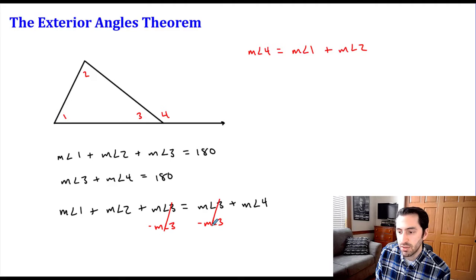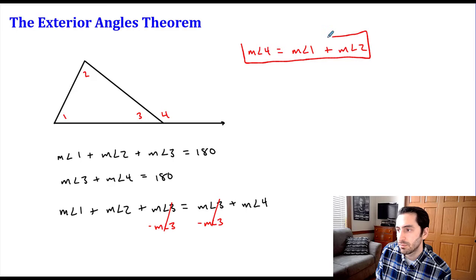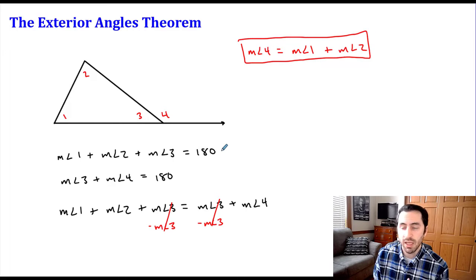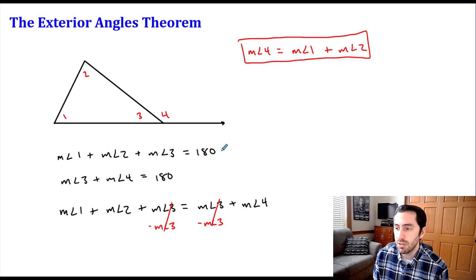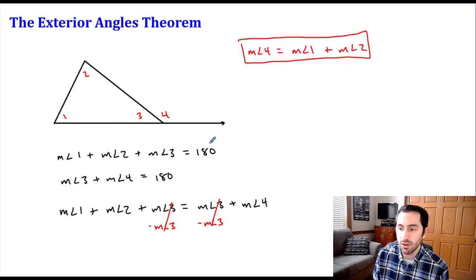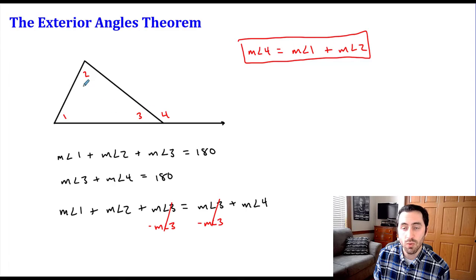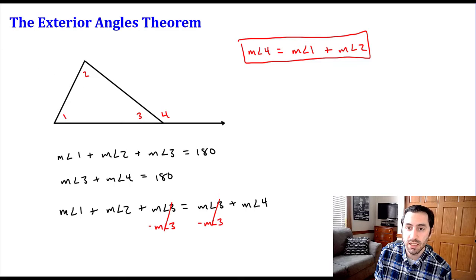It results in zero and all we're left with is our exterior angle theorem. Using our angle relationships and a little substitution to bring this all together, we end up with: the measure of the exterior angle — angle four in my picture — is equal to the sum of the two non-adjacent angles, which are angle one and angle two.